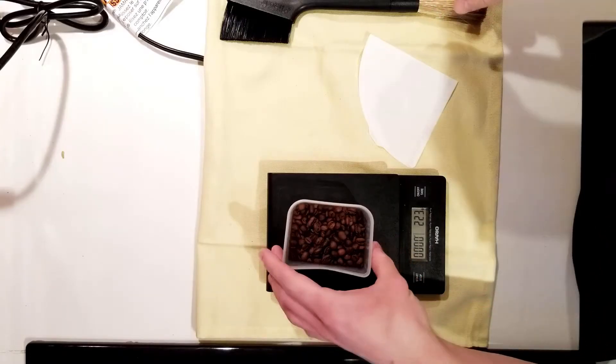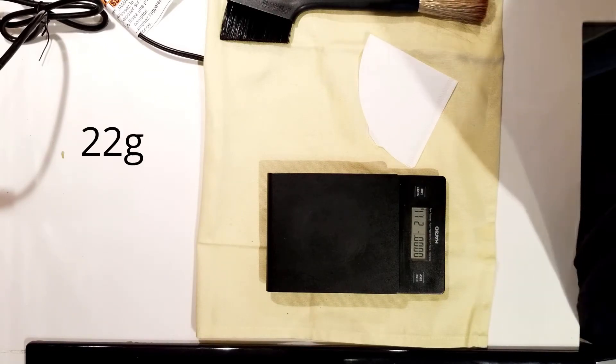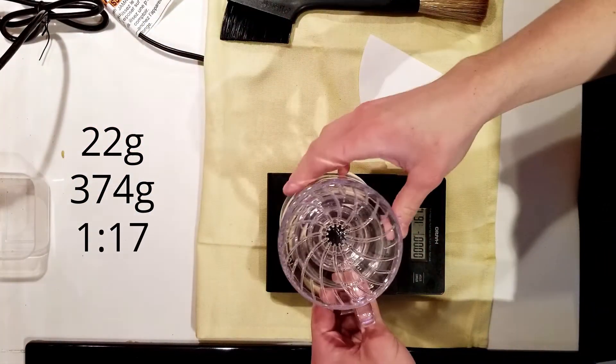So starting the brew now, I weigh and grind my coffee. I'm using 22 grams in with about 374 grams of water added for a 1 to 17 brew ratio.